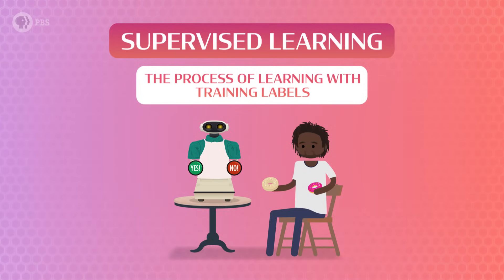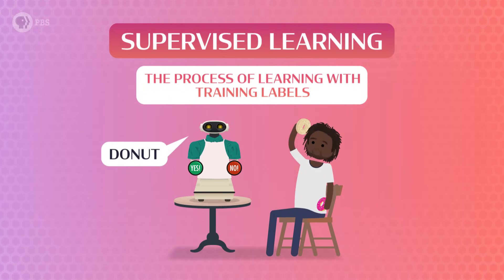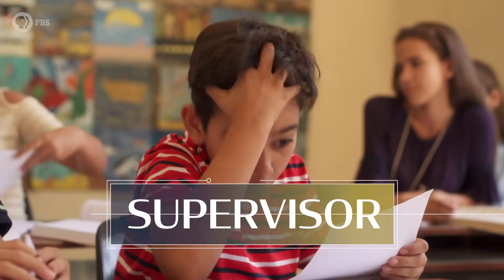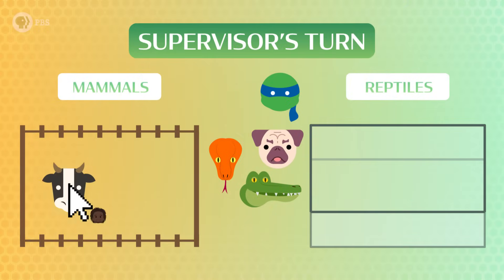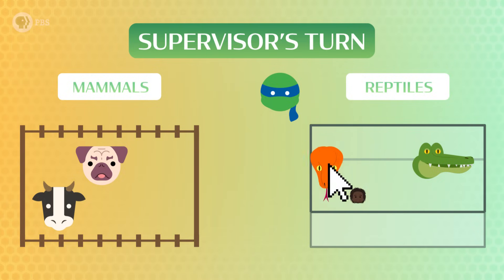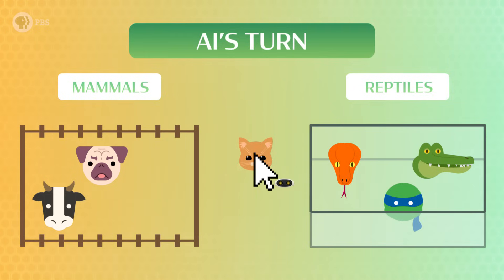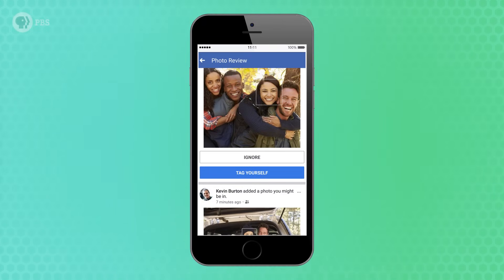Supervised learning is the process of learning with training labels. It's the most widely used kind of learning when it comes to AI, and it's what we'll focus on today and in the next few videos. Supervised learning is when someone who knows the right answer, called a supervisor, points out mistakes during the learning process. It's how email accounts can correctly classify a message from your boss as important and ads as spam, how Facebook tells your face apart from your friend's face for tag suggestions, and how your bank may decide whether your loan request is approved or not.